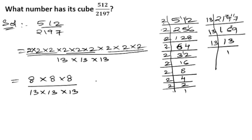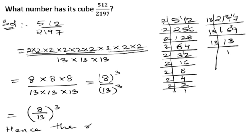The number which is multiplied three times will be written as cube. So we can write 8 cube upon 13 cube. If both numerator and denominator are having the same power, we can take the power as common. So we can write 8 upon 13 whole to the power of 3. Therefore, the required number is 8 upon 13. Hence the cube of 8 upon 13 is 512 upon 2197.